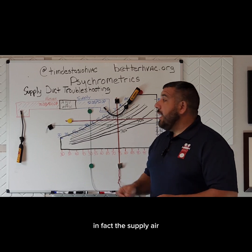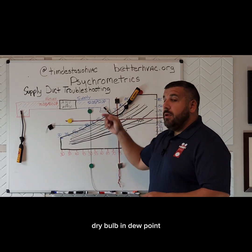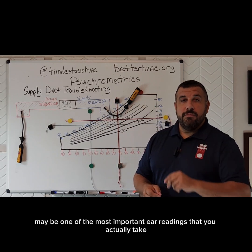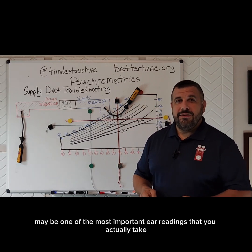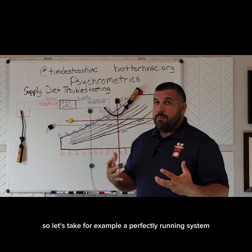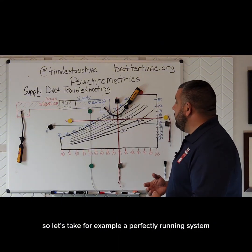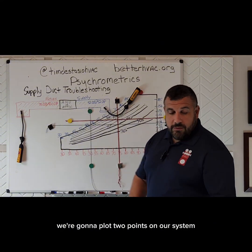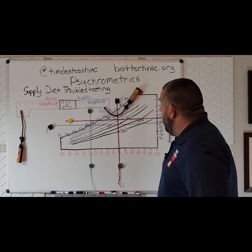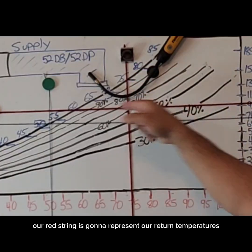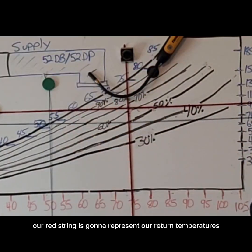In fact, the supply air dry bulb and dew point may be one of the most important air readings that you actually take. So let's take, for example, a perfectly running system. We're going to plot two points on our system. Our red string is going to represent our return temperatures.